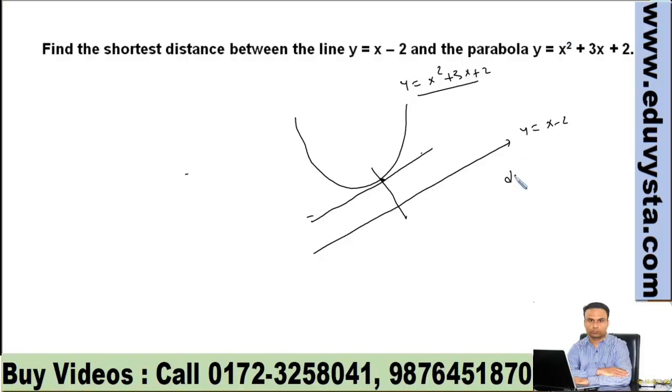This is very simple question. What is the point? dy/dx is equal to 2x plus 3. You compare this value to 1. Then you get value of x is equal to minus 1. So for this point value of x is minus 1. You put x minus 1 here. So, y value is 0.